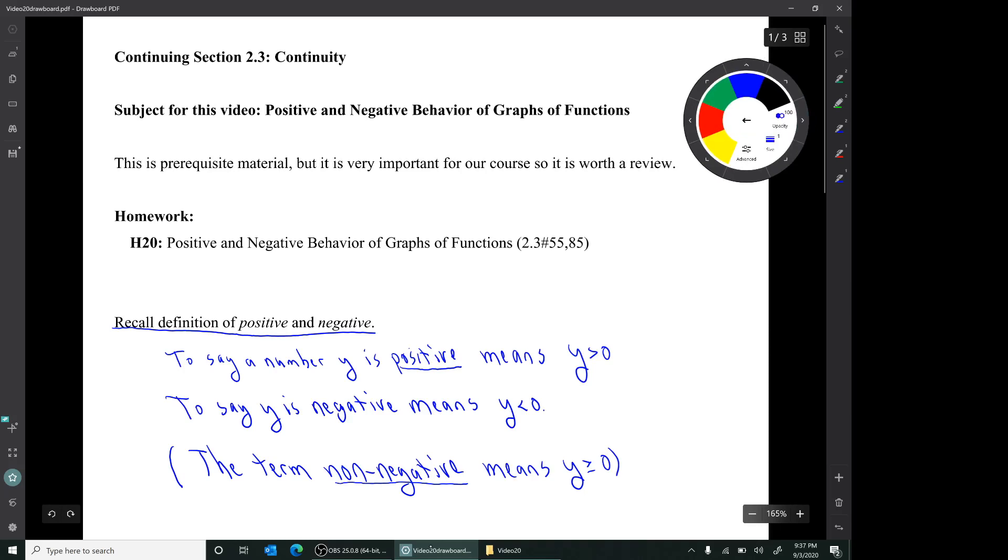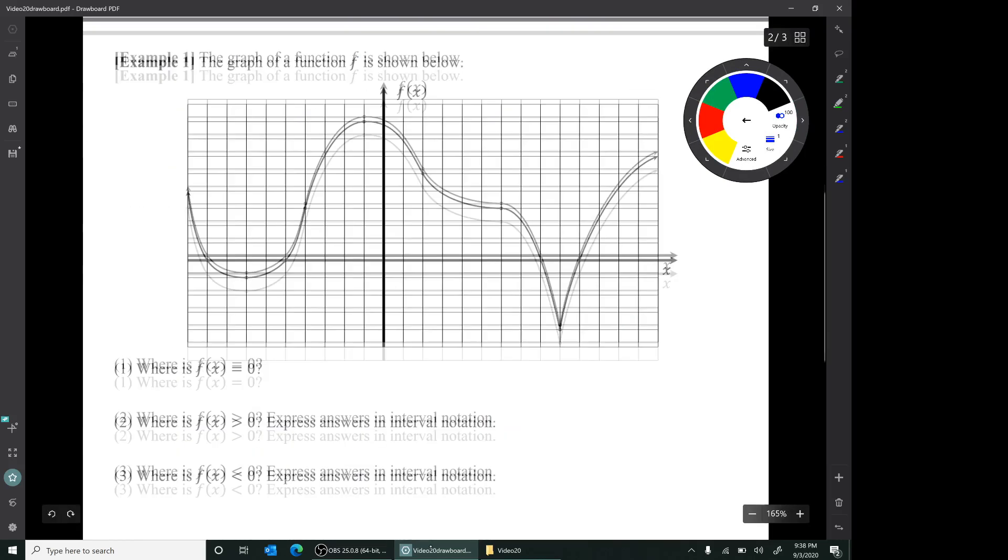But in this course, we're going to be interested in these two things: positive numbers and negative numbers. Our first example, we're given the graph of a function and we're asked three questions. The first question is, where is f(x) equal to zero?